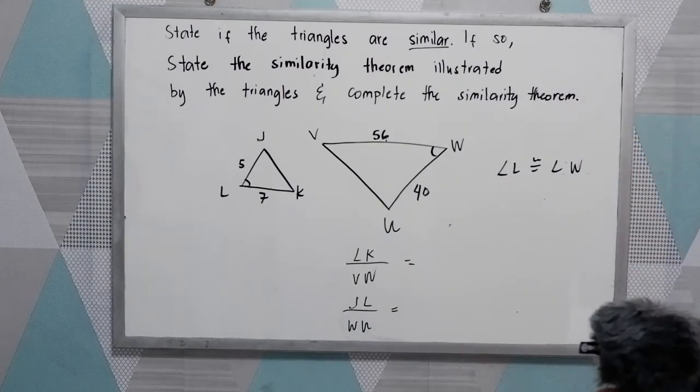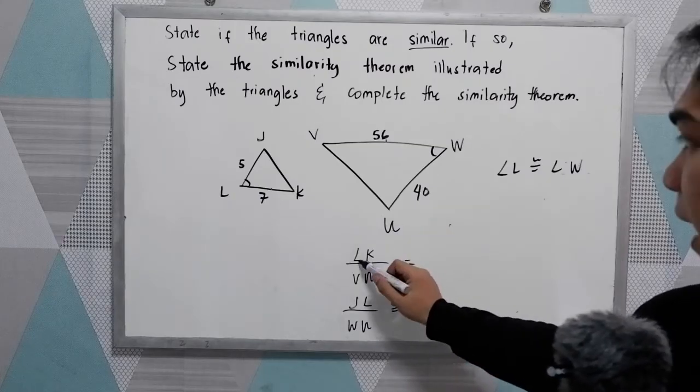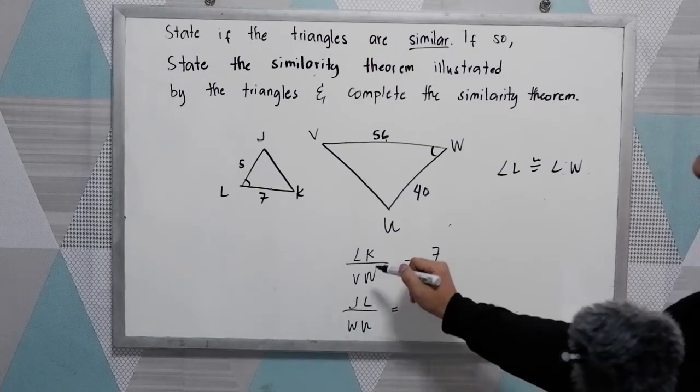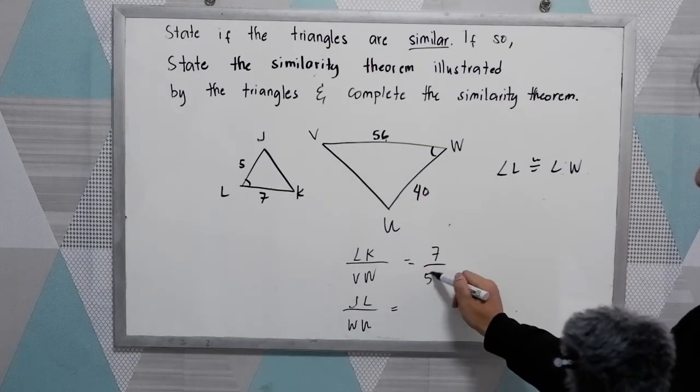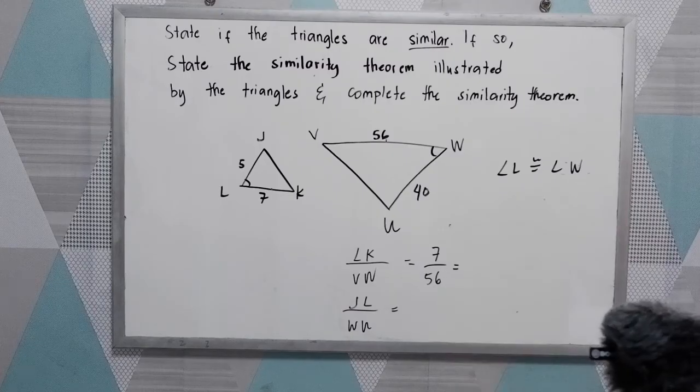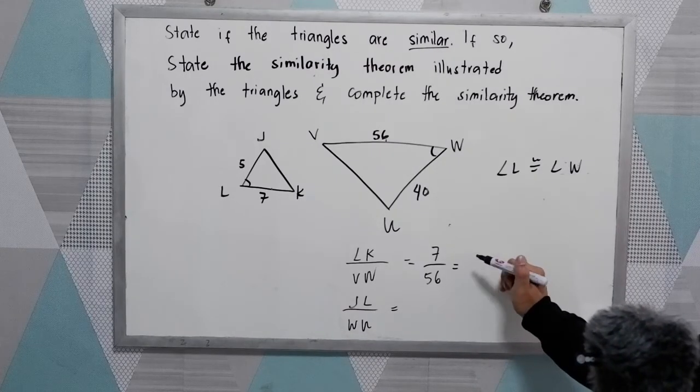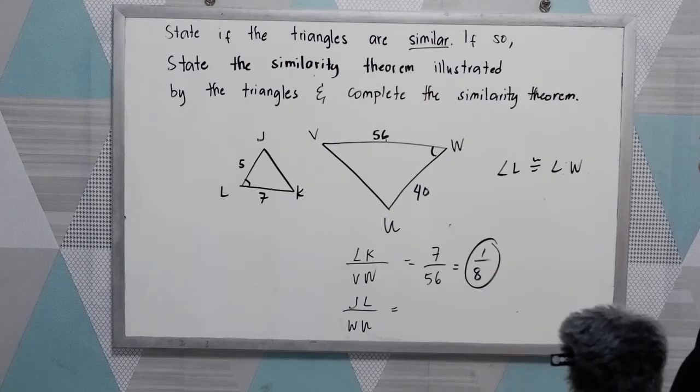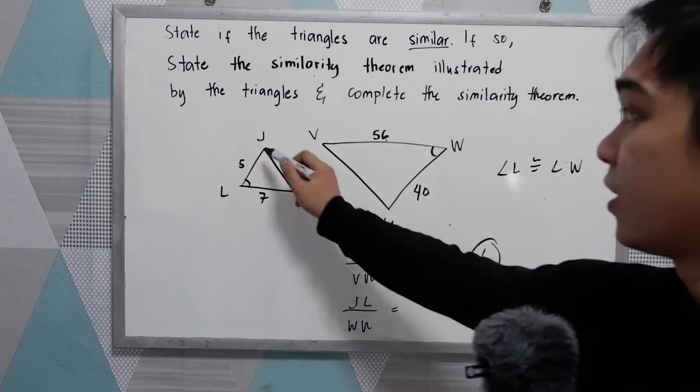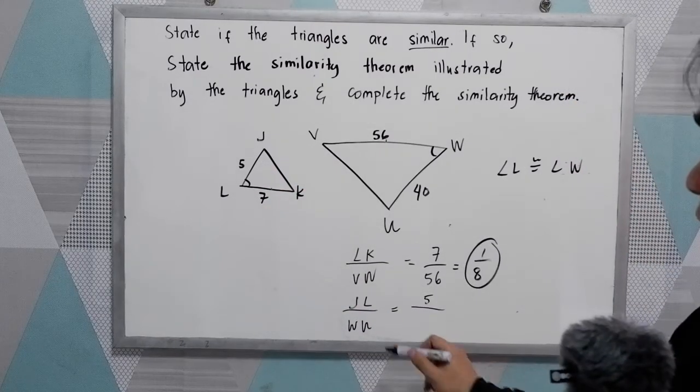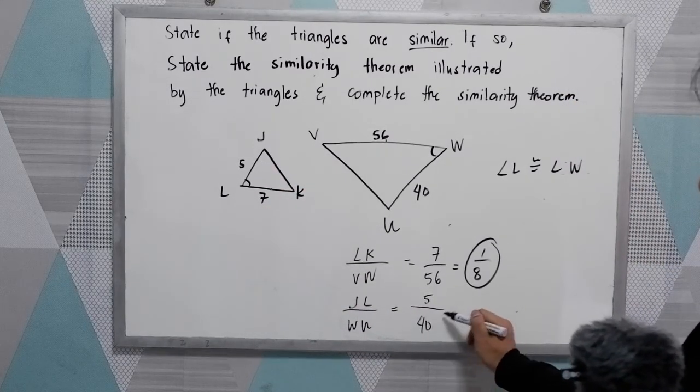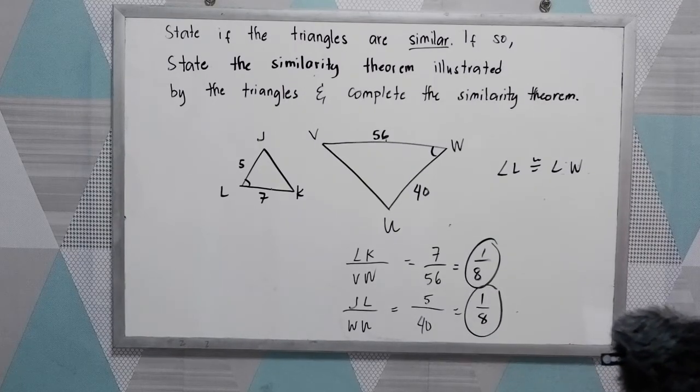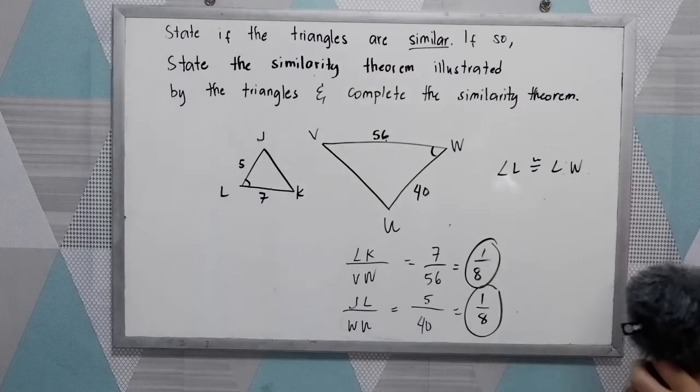Now, find the measures. LK is 7 over VW is 56. 7 over 56 equals 1 over 8. JL is 5 over WU is 40. That is also 1 over 8. They are proportional, so